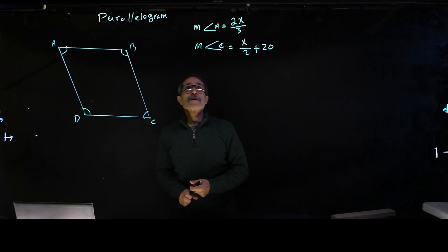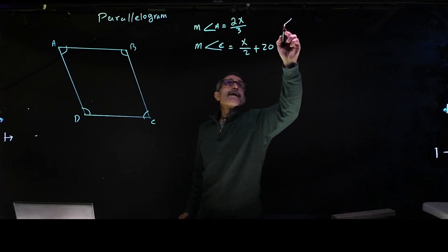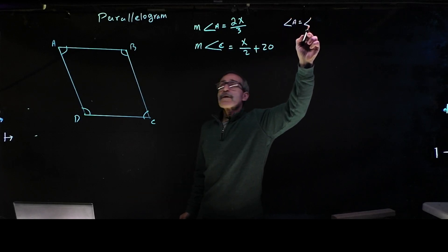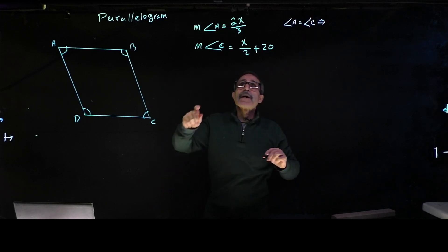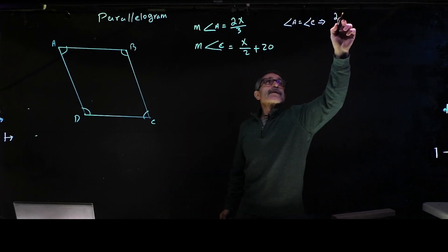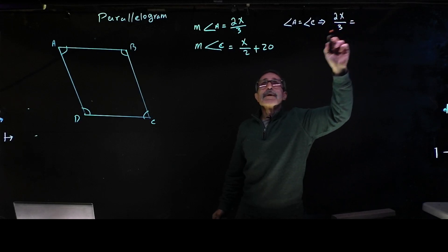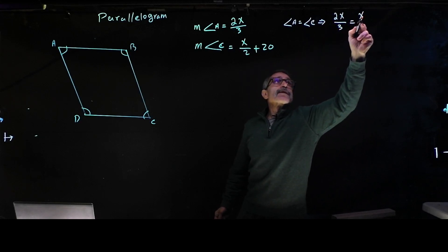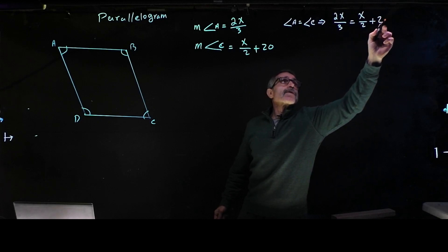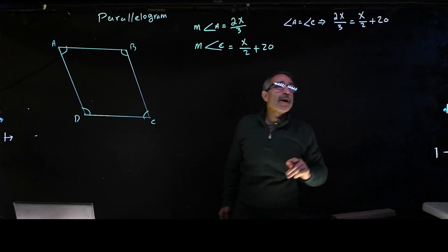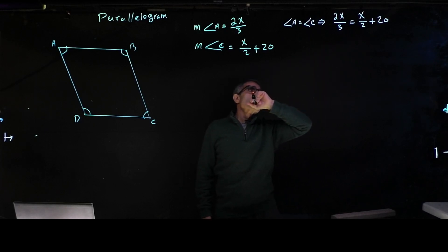So we're going to say angle A is equal to angle C. Therefore, I can say 2x divided by 3, which is angle A, equals angle C, which is x divided by 2 plus 20. So now we have this simple algebra to solve.